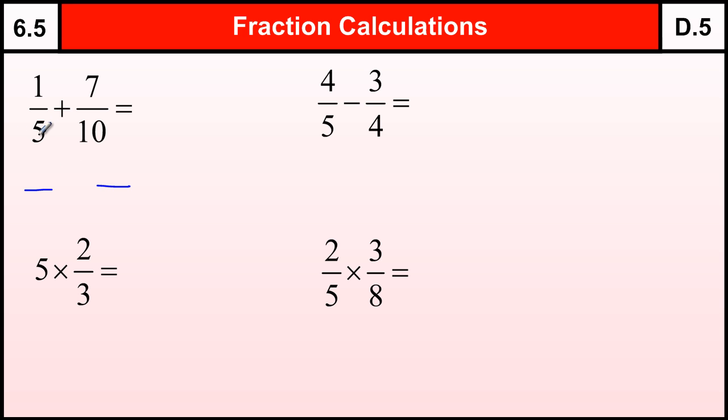So we've got to think of the number that fifths go into and tenths go into. But it just so happens that if I double one-fifth, or double the top and double the bottom to find an equivalent fraction, that is the same as two-tenths. Now I've got seven-tenths there, so I can then combine those to make nine-tenths.